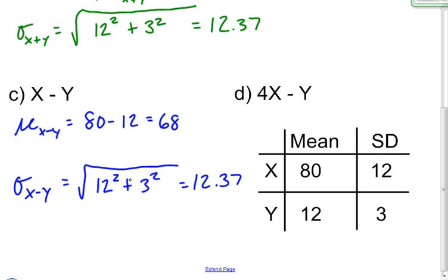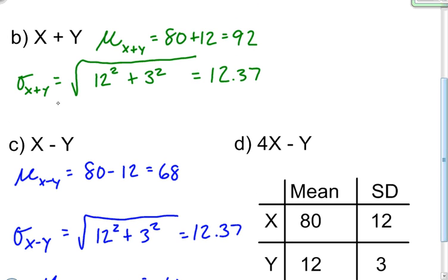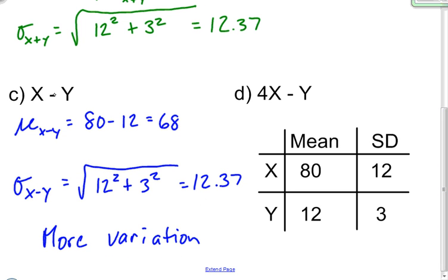You may ask yourself: why am I adding the variances together when I am subtracting the random variables? Well when you are combining two random variables in any way, whether through addition or subtraction, you are creating more variation. It does not matter if you are adding or subtracting. There's more variation within the distribution, and therefore when you find the standard deviation of the difference of two random variables, you still must add the two variances together.